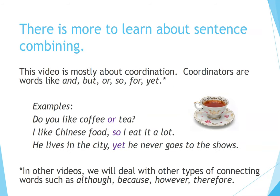There's more to learn about sentence combining. This video is mostly about coordination. Coordinators are words like: and, but, or, so, for, yet. Examples: 'Do you like coffee or tea?' 'I like Chinese food, so I eat it a lot.' 'He lives in the city, yet he never goes to the shows.' In other videos, we will deal with other types of connecting words, such as: although, because, however, therefore.